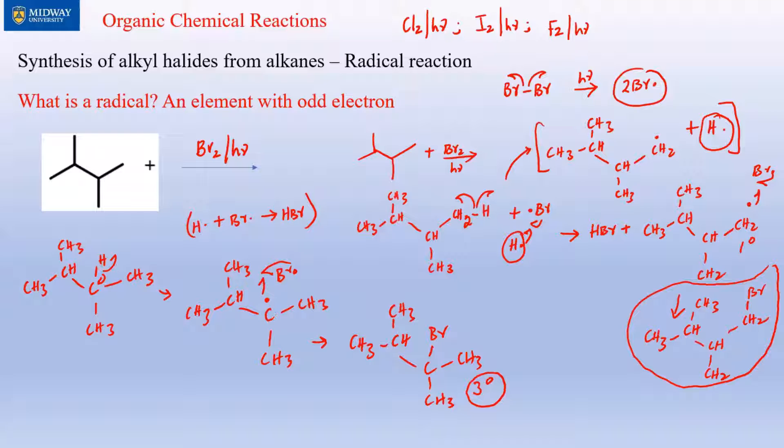If a carbon contains three bonds and the fourth is not a hydrogen, that's tertiary. If it contains one hydrogen that's secondary, if it contains two that's primary. So this is the most stable.